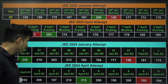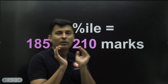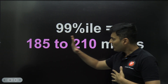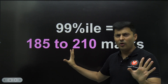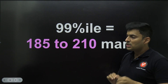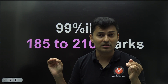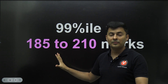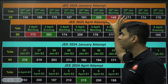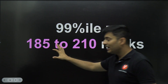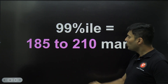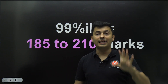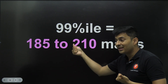The spread in the April 2024 attempt is not too much, but in certain places the spread is decent. If you look at the spread of 99 percentile, on an average you need 185 to 210 marks depending on how difficult or easy the shift is. If it is difficult it can go to even 160 or 150 marks — very rare as you can see in the table — but usually 185 to 190 marks is needed, and 210 marks will put you on the sure-shot list for 99 percentile when the paper is easy.